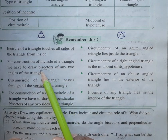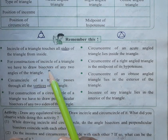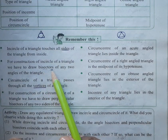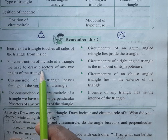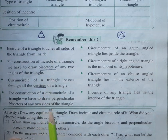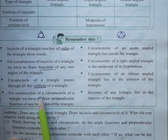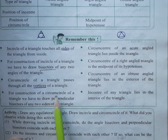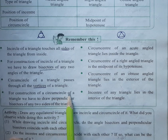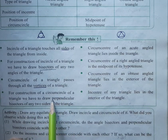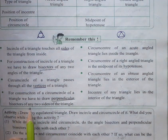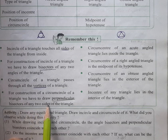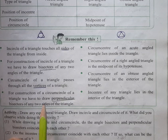For construction of an incircle of a triangle, we have to draw the bisector of any two angles of the triangle. For construction of the circumcircle, we have to draw the perpendicular bisector of any two sides of the triangle.